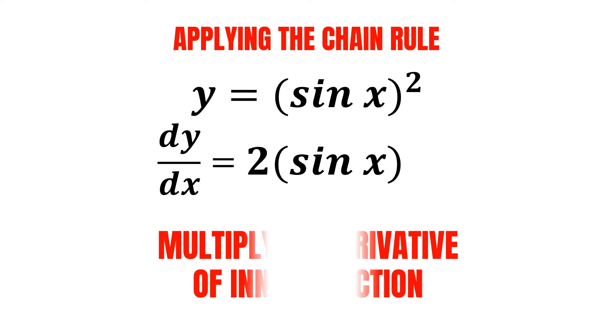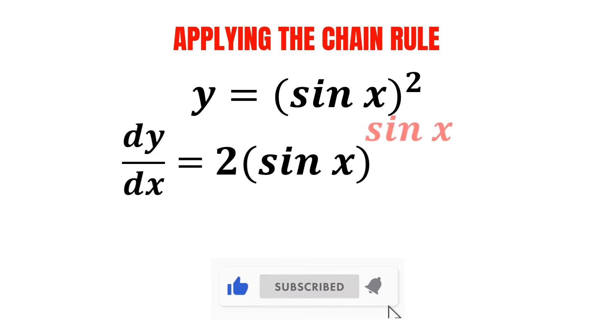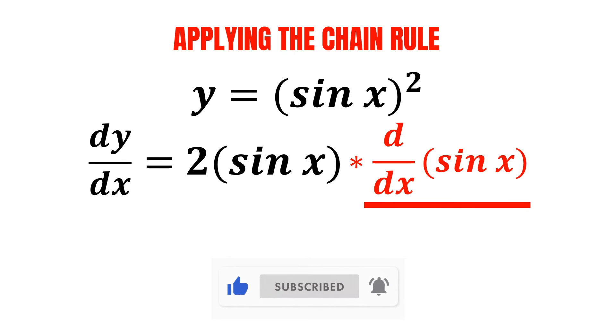Then, we multiply it by the derivative of the inner function, which in this case is the derivative of sine x. We know that the derivative of sine x is equal to the cosine of x, so we multiply it by cosine x.